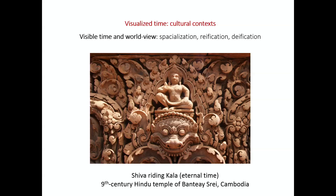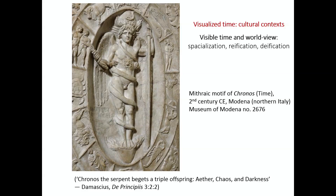The display of calendars also has something to do with a concept of time which is visual, spatialized, reified — turned into something real — and deified — turned into a god. Here is the example of a time god from an entirely different tradition: Shiva is riding the god Kala. Kala means eternal time, conceived here as a sort of vehicle carrying the gods or carrying the world. Moving back to the Roman Empire, here we have a very fine personification of time in the form of the god Kronos.